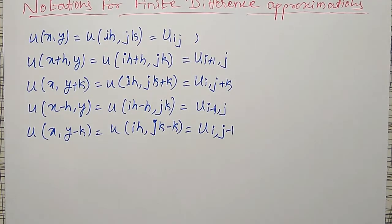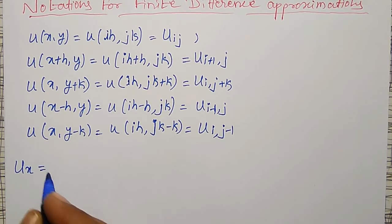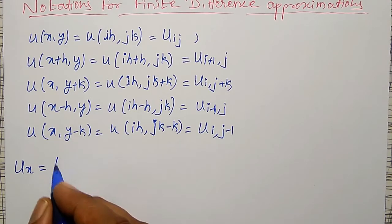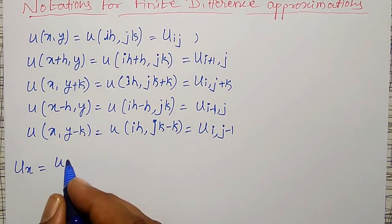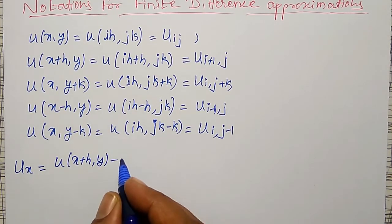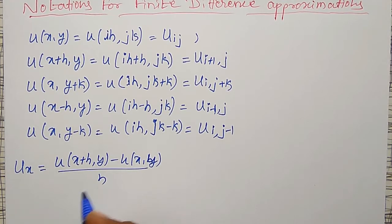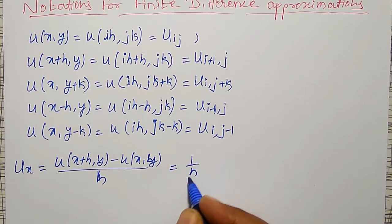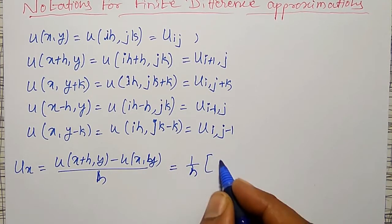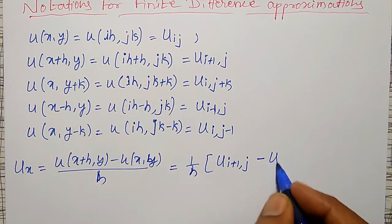Using these notations, I can write the finite differences of partial derivatives. The forward difference for u_x equals u of x plus h comma y minus u of x comma y, divided by h. In short notation, that is 1/h times u_{i+1, j} minus u_{i, j}.